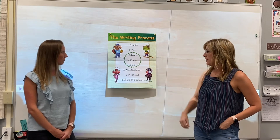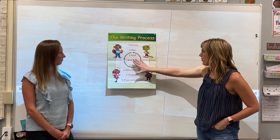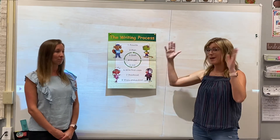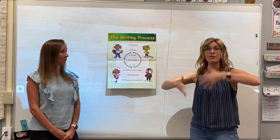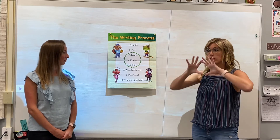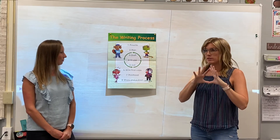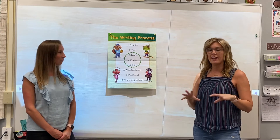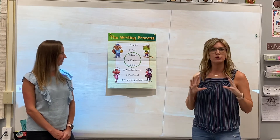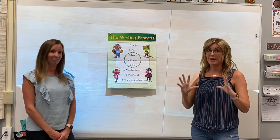Writing a final copy is the sixth step. So once you've done steps one through five, you're going to write your final copy. That means all of the corrections have been made, and then you're going to write it on a fresh piece of paper with your best handwriting — everything capitalized, all of the punctuation is there, and it is your best version.